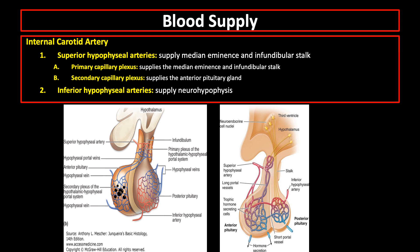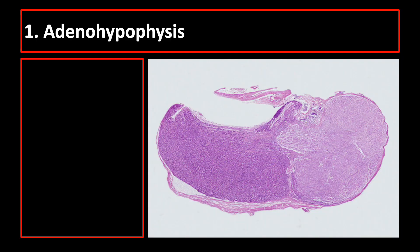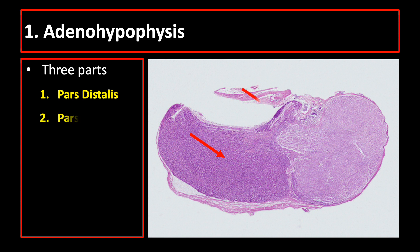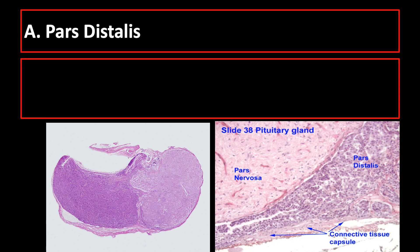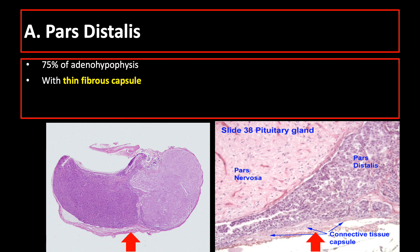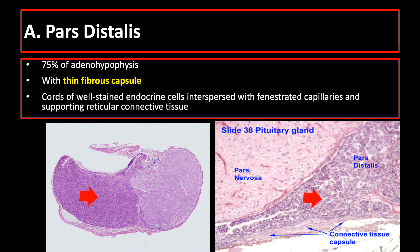The portal system carries neuropeptides from the median eminence to the adenohypophysis, where they either stimulate or inhibit hormone release by the anterior pituitary gland. The pars distalis composes 75% of the anterior pituitary gland. It has a thin fibrous capsule, and the main components are cords of well-stained endocrine cells interspersed with fenestrated capillaries and supporting reticular connective tissue.